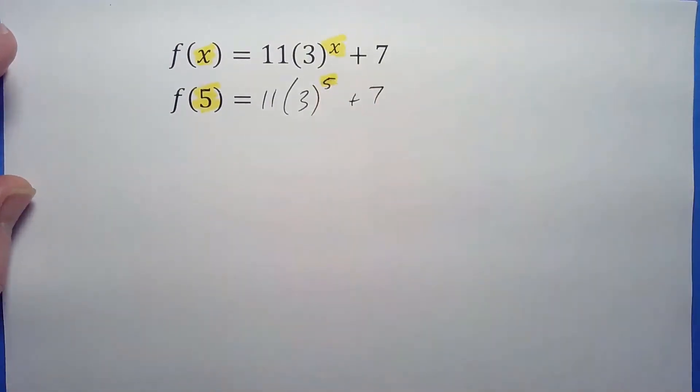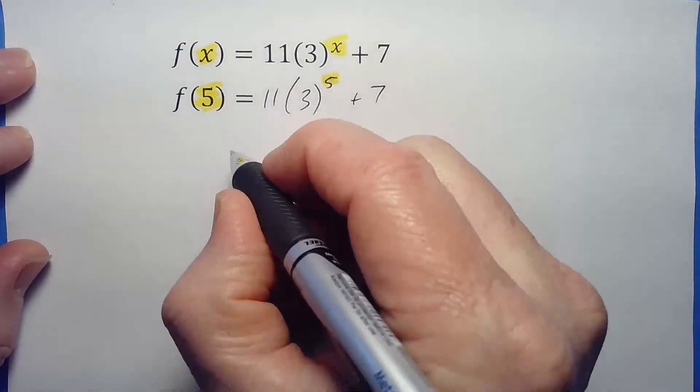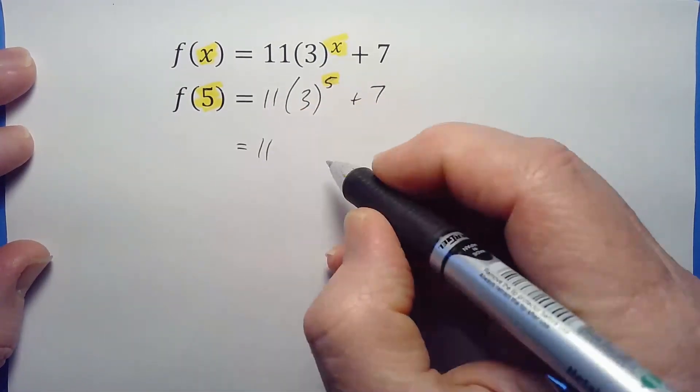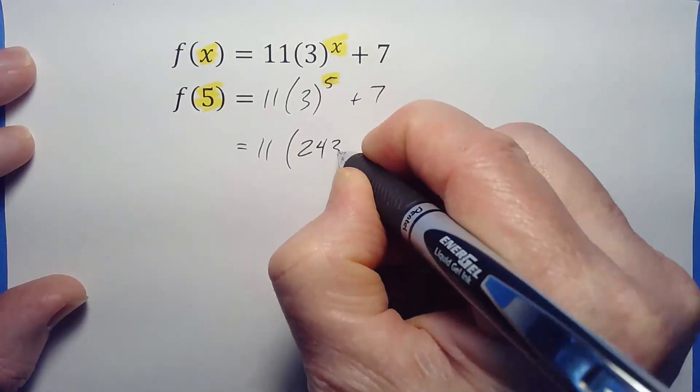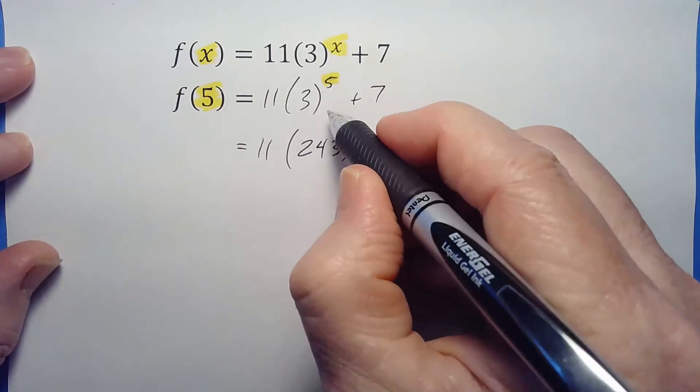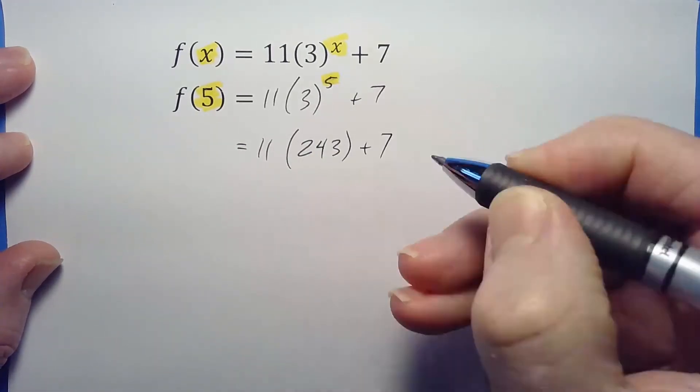Here's how we replaced it. That's not bad. Now, 3 to the 5th, if you multiply that out, turns out that's 243. 3 times 3 times 3 times 3 times 3, you'll get 243.